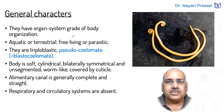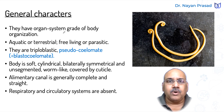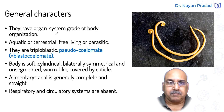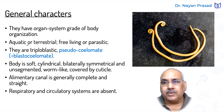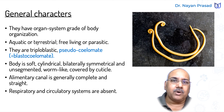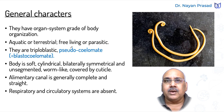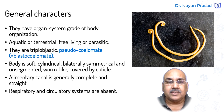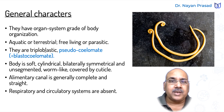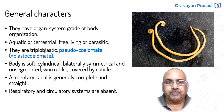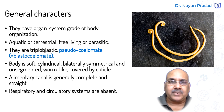Let us see the general characters of these individuals. They have organ system grade of body organization, meaning organ systems are now almost developed; however, certain organ systems are still to develop. They may be aquatic or terrestrial — some members live in water while others are found on land. They may be free-living or parasitic. They are triploblastic animals, meaning having three germinal layers: outer ectoderm, middle mesoderm, and inner endoderm.